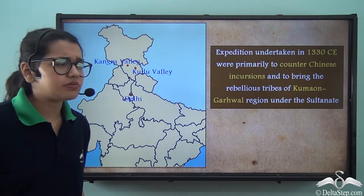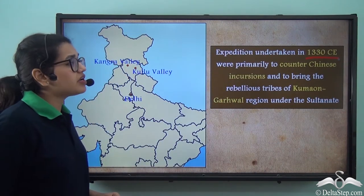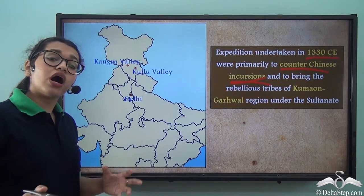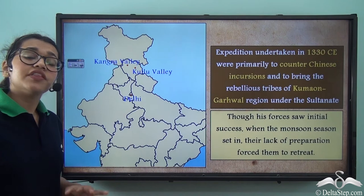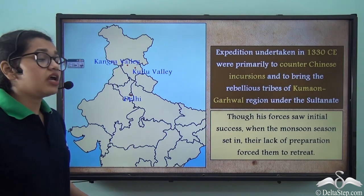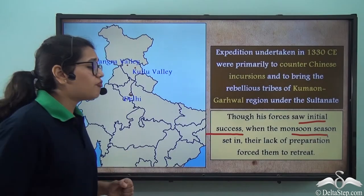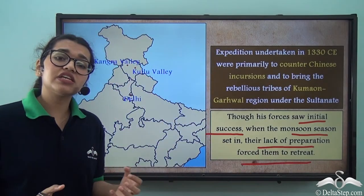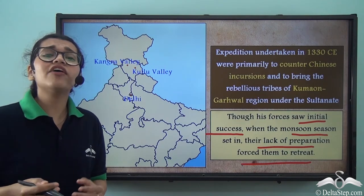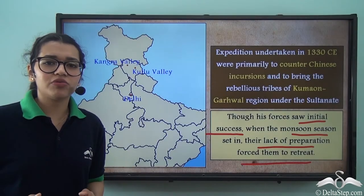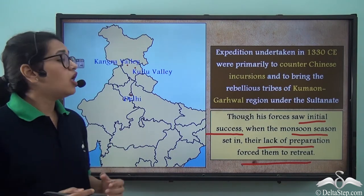Another military expedition was undertaken in 1330 CE, primarily to counter Chinese incursions and to bring the rebellious tribes of the Kumaon-Garhwal region under the Sultanate. Though his forces saw initial success, when the monsoon season came in, their lack of preparation forced them to retreat. They had no waterproof material and transportation became a problem in the rain. Once again, money was lost.